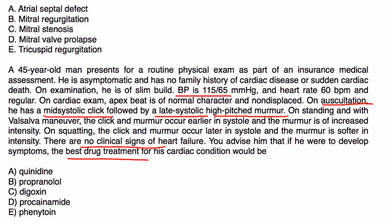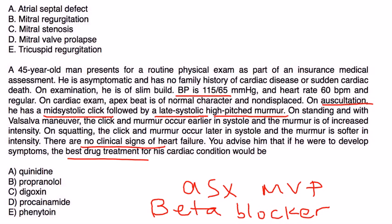Well, the patient most likely has asymptomatic mitral valve prolapse, so asymptomatic MVP. But if he does develop symptoms, the most likely treatment medically would be beta blockers. And the beta blocker would be used to treat symptoms such as palpitations or migraines or dizziness. And of these, the beta blocker is propranolol.